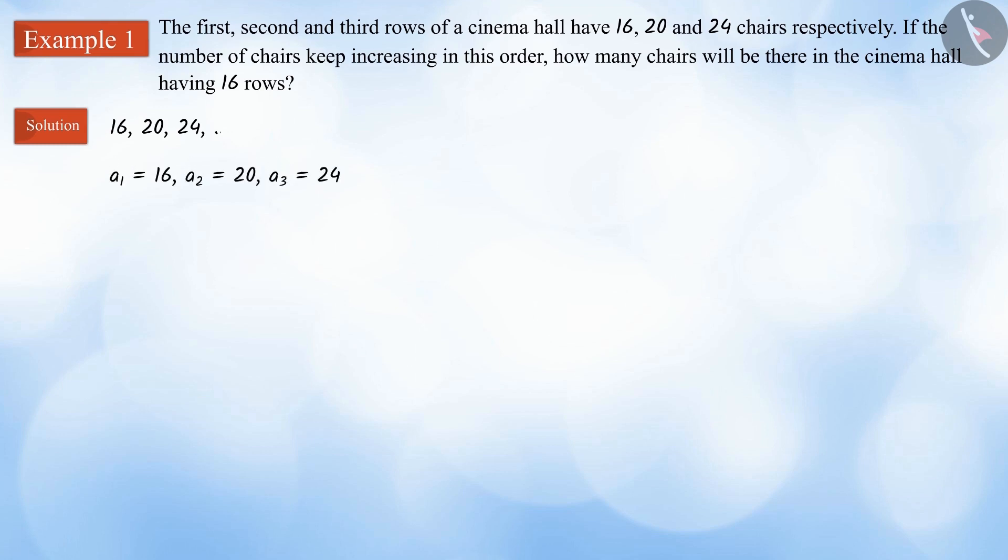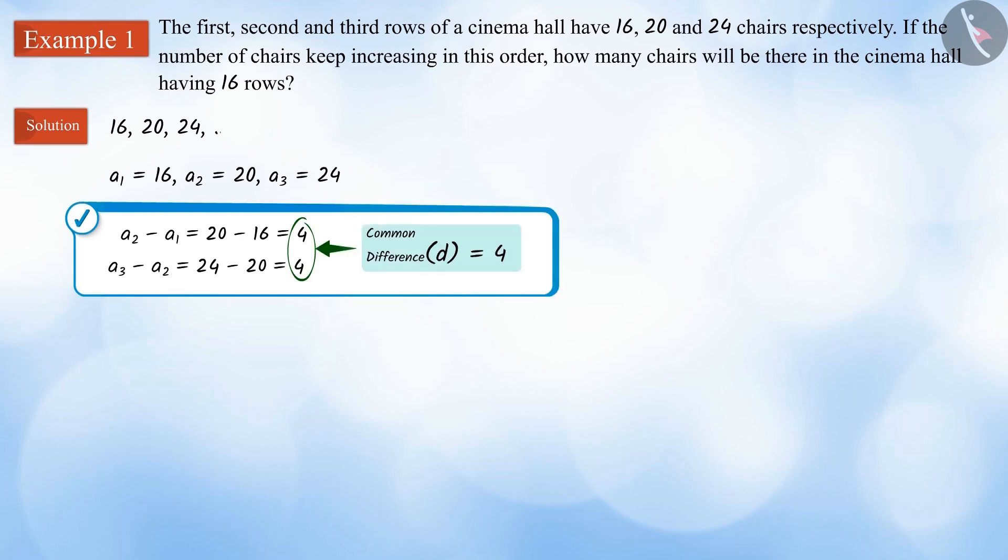The first term in this series is 16, the second term is 20 and the third term is 24. Here, the difference of two consecutive terms is the same, that is 4, which is the common difference d of this series. Hence, this progression is an arithmetic progression. Well done!